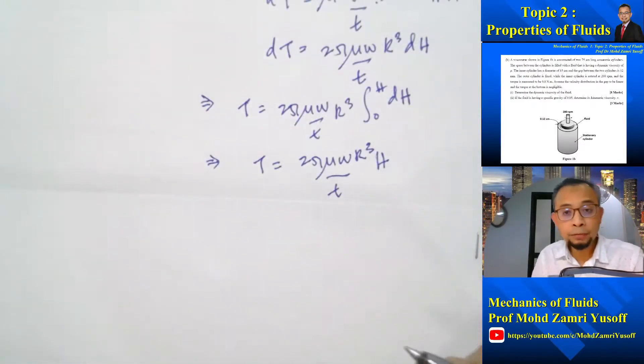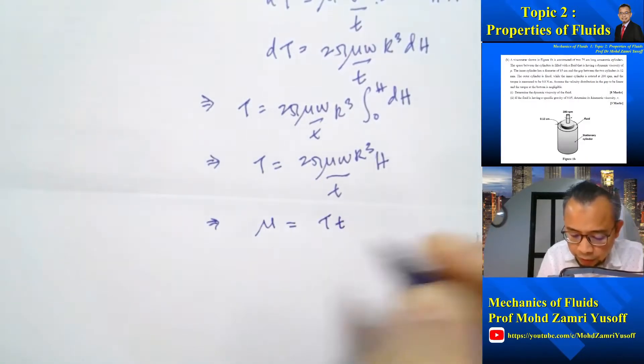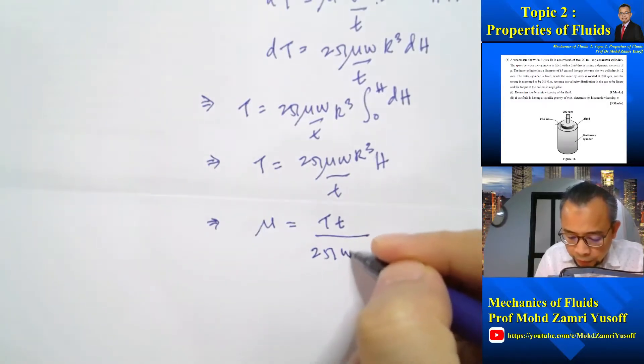So now if I rearrange in order to get mu, I can write mu equals torque multiplied by t divided by 2 pi omega r cubed H.